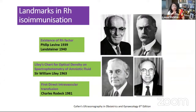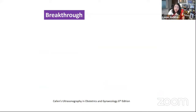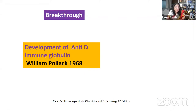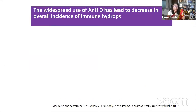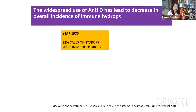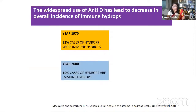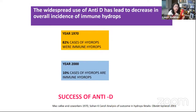The existence of the RH factor itself was discovered only in 1940. Lilly's chart for optical density on spectrophotometry of amniotic fluid came into existence in 1963. The first direct intravascular transfusion was done by Charles in 1981. But the breakthrough in this field was the development of anti-D immunoglobulin by William Pollack in 1968. The widespread use of anti-D has led to a decrease in overall incidence of immune hydrops. In 1970, there were 82% cases of immune hydrops, but by the year 2000, after the discovery of anti-D, this incidence decreased from 82% to 10%. So this is a miracle discovery which has come into our armamentarium.